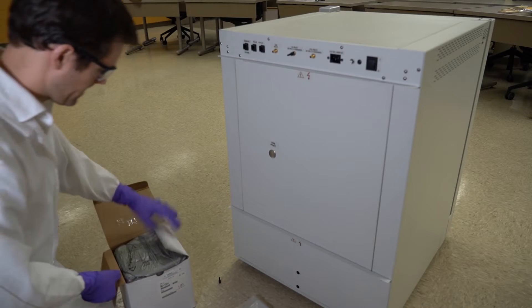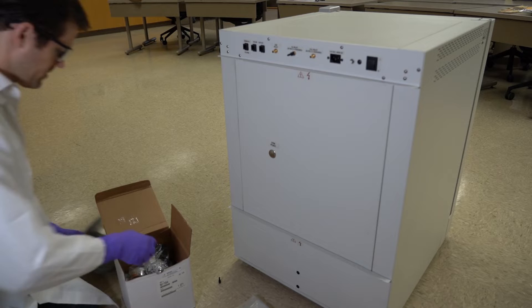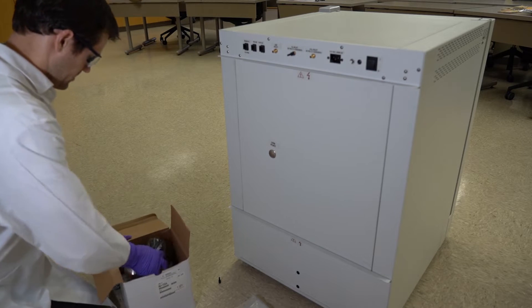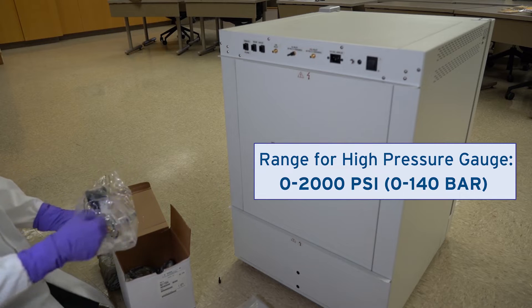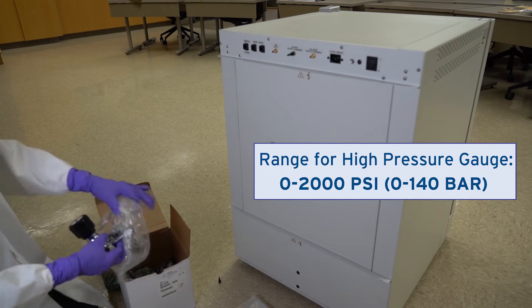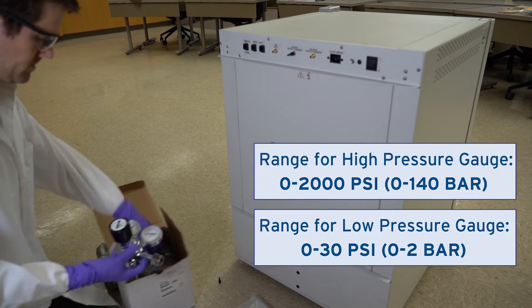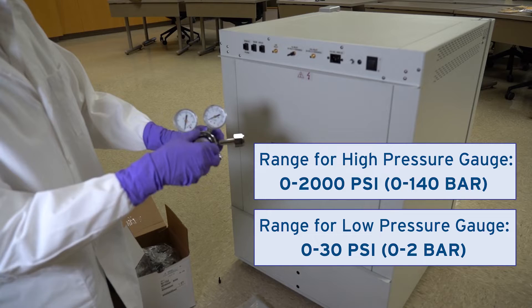You must use a two-stage regulator to ensure that you provide CO2 to the incubator at this pressure. The gauge for the high pressure stage of this regulator should read from 0 to 2,000 psi or 0 to 140 bar. The gauge for the low pressure stage should read from 0 to 30 psi or 0 to 2 bar.